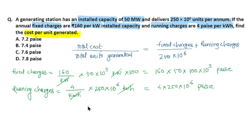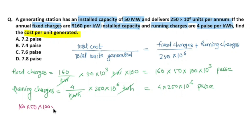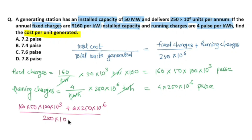Since our answer needs to be in paise, if we have rupees we divide by 100 to convert. We add fixed charges and running charges, then divide by 250×10⁶. So total cost = (160 × 50 × 100 × 10³) + (4 × 250×10⁶), divided by 250×10⁶.